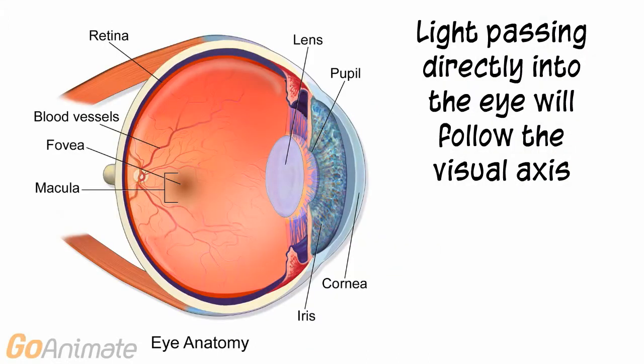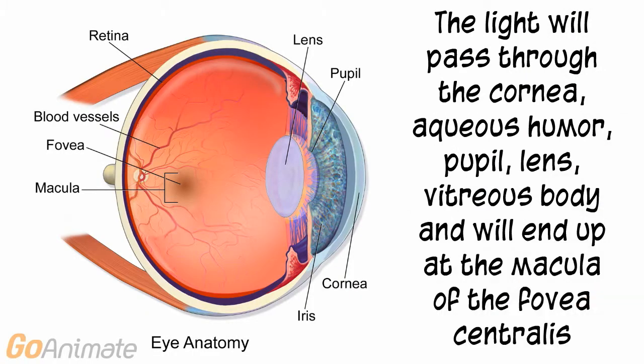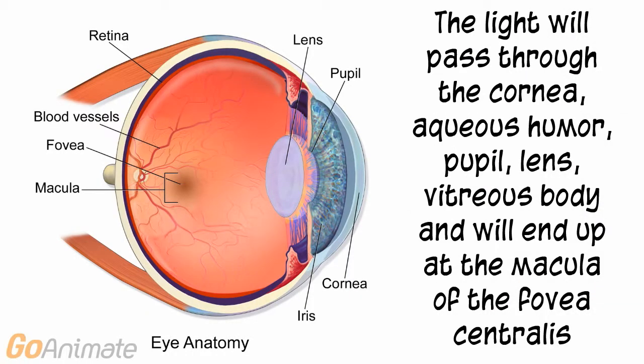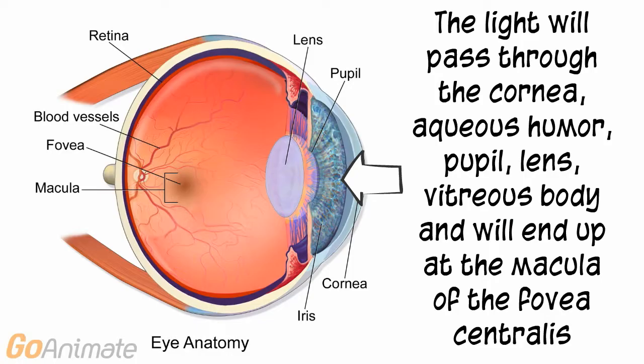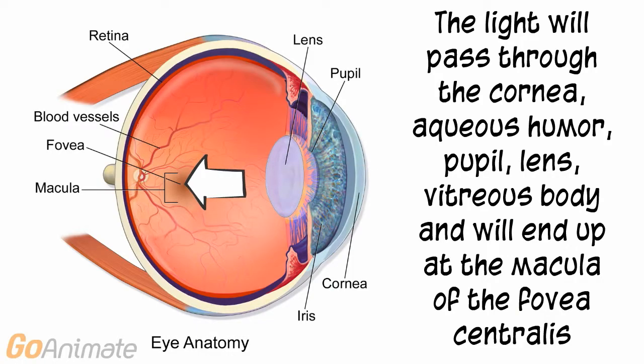Light passing directly into the eye will follow the visual axis. Light will pass through the cornea, aqueous humor, pupil, lens, and vitreous body, and end up on the retina at an area known as the fovea centralis.